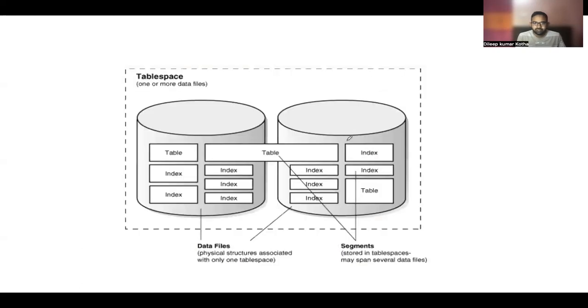So this is what I'm talking about. A segment can spread across multiple data files. Here there are two data files you can see and a table is spread across these two data files. If you see a tablespace, it's one or more data files. They form the tablespace. Here you can see segments indicating like a table or index can be called a segment. So this is what physical and logical storage of the database. Next we will look at some more architectural views of the Oracle database.